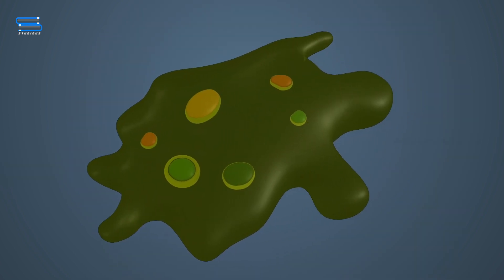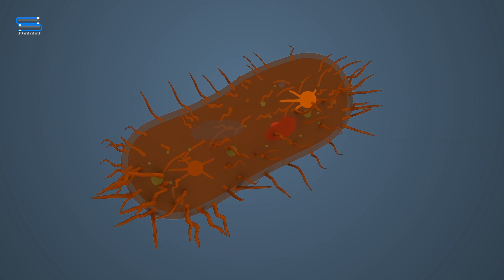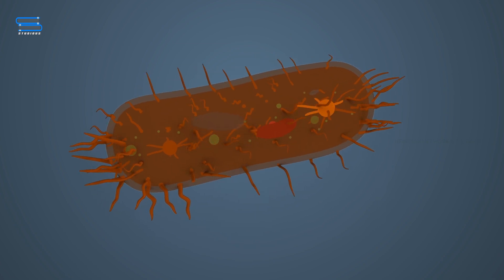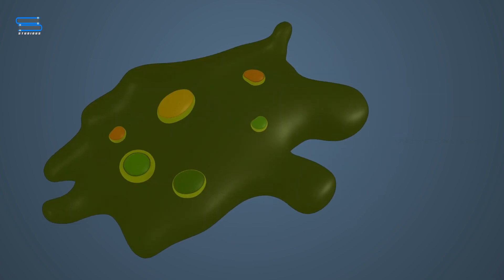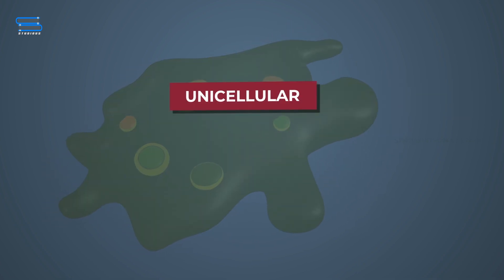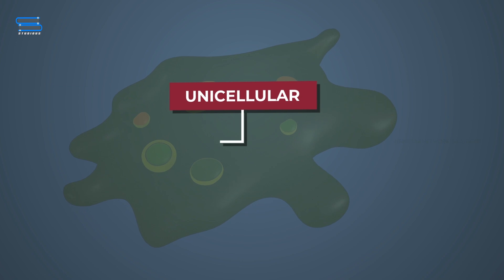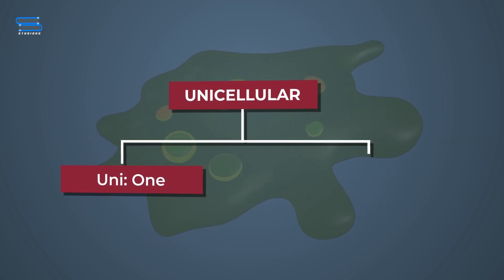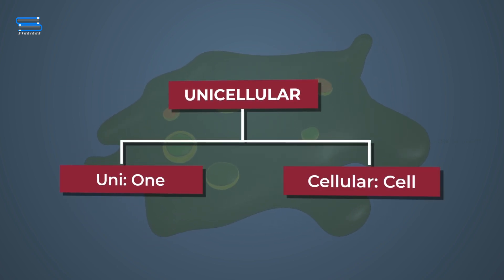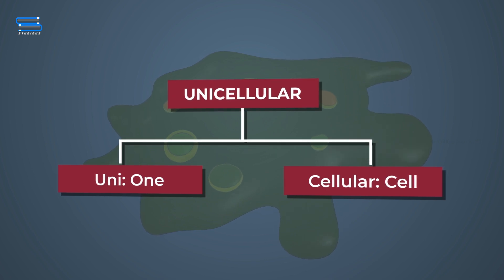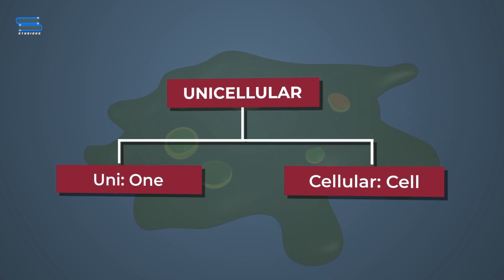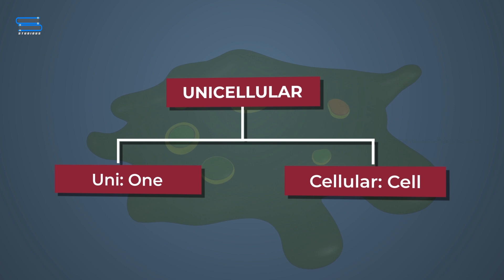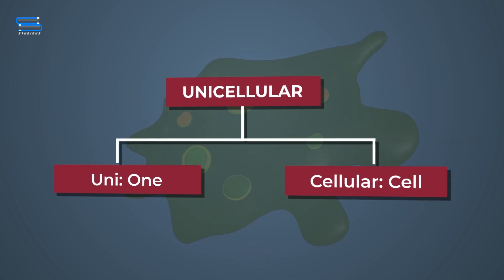As such, there are also organisms that are made up of a single cell and are therefore called unicellular organisms. Uni means one and cellular means cell. A unicellular organism can also carry out all those functions that a multicellular organism does.